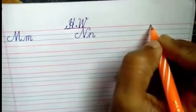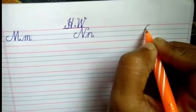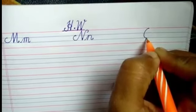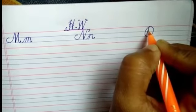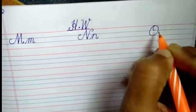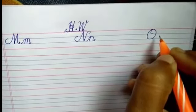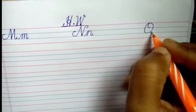Now we will write capital O. Put your pencil on line number 1. Make a C like curve to line number 3. Make a round and half turn till line number 2. This is capital O.